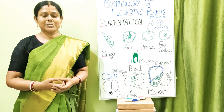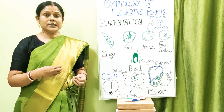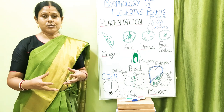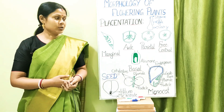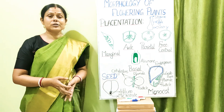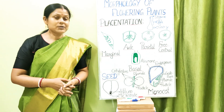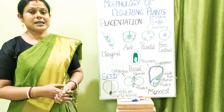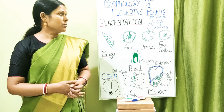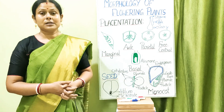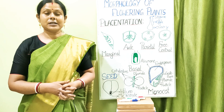This completes our study of the various parts of the flower and their role after fertilization in the growth of the plant — covering the morphology of flowering plants. The only part remaining is the floral formula and floral diagram, which we will take up in our next class.